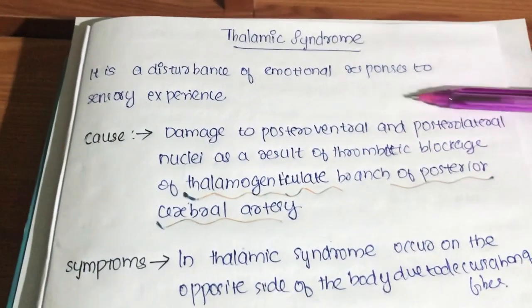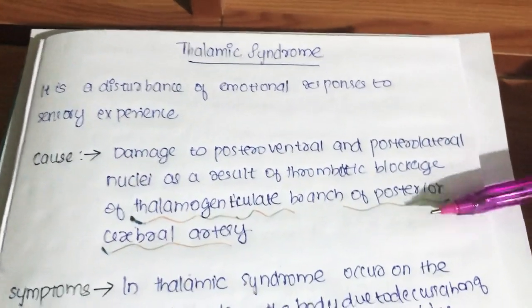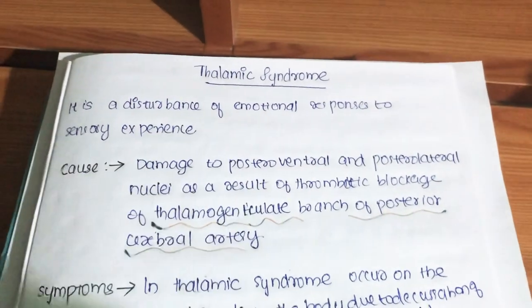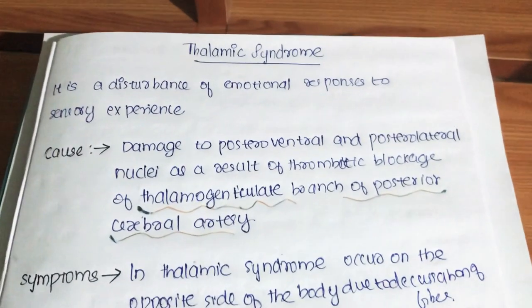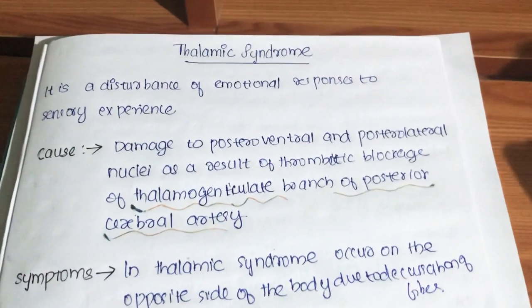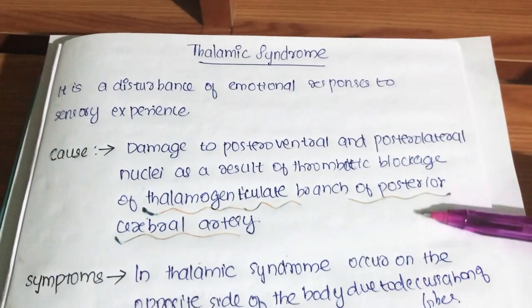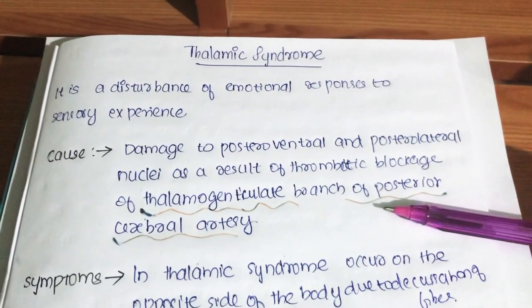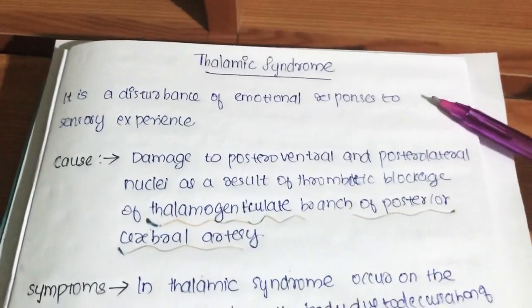The cause of thalamic syndrome is a thrombotic blockage — specifically, it damages the posteroventral and posterolateral nuclei as a result of thrombotic blockage of the thalamogeniculate branch of the posterior cerebral artery. This blockage results in damage to the posteroventral and posterolateral nuclei.